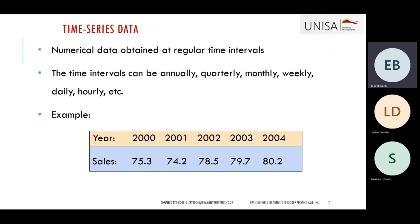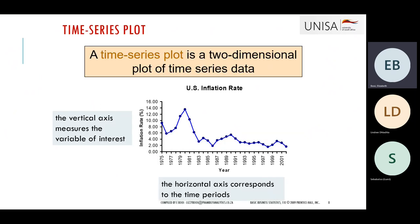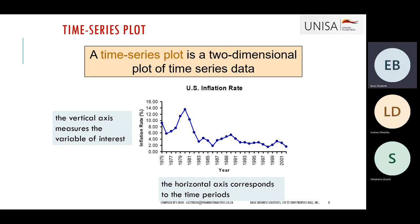Looking at an example: in years 2000, 2001, and 2002, we are given sales per year — in 2000 the sales were 75.3, in 2001 it was 74.2, and so on. That is a yearly time interval. We can take this data and visualize it using a time series plot, putting the years on the horizontal axis and the sales on the vertical axis. A time series plot is a two-dimensional data plot of your time series data.